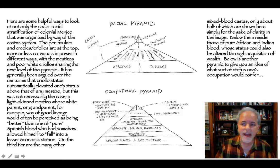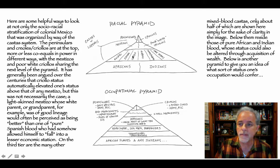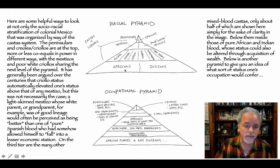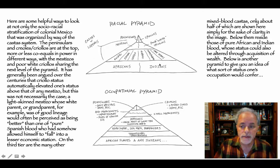On the third tier are the many other mixed-blood castas. Below them reside those of pure African and Indian blood, whose status could also be altered through acquisition of wealth. Africans were generally below Indians, though that becomes debatable depending on how you parse it.